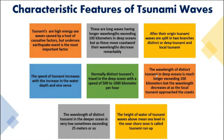Tsunamis are divided into two types: distant or deep-sea tsunamis, and local tsunamis. After originating in deep waters, tsunami energy splits into these two branches. The distant tsunami moves out into the deep ocean while the local tsunami travels toward coastal areas. These two move in opposite directions; the distant tsunami travels much faster, but it is the local tsunami that causes destruction in coastal areas.